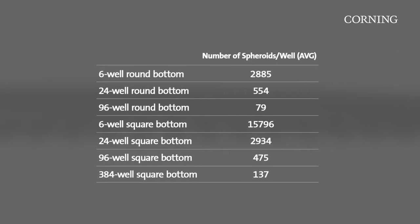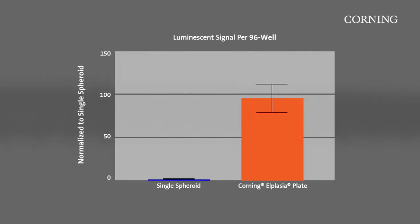Using L-plasia plates, researchers can produce from 79 to 15,000-plus spheroids per well. The high volume of spheroids per well increases the signals per well without increasing spheroid size.